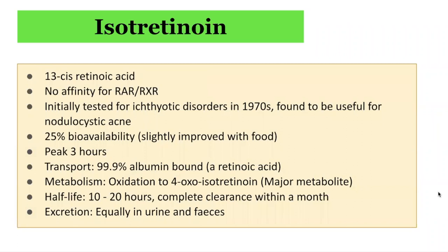Isotretinoin, also known as 13-cis-retinoic acid, was initially used in ichthyotic disorders in the 1970s but was found useful for treating nodular cystic acne. It has 25% bioavailability, slightly improved with fatty food, and peak levels occur three hours after ingestion. In terms of transport, 99.9% is bound to albumin. It is metabolized by oxidation to 4-oxo-isotretinoin, its major metabolite. Its half-life is 10 to 20 hours and it generally clears completely within a month. It is equally excreted in urine and feces.